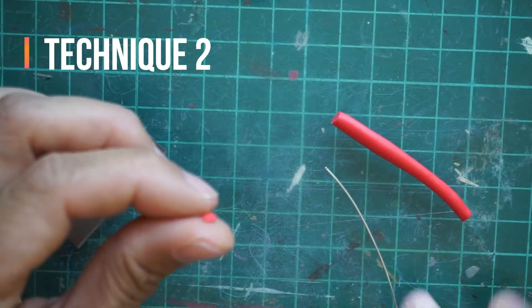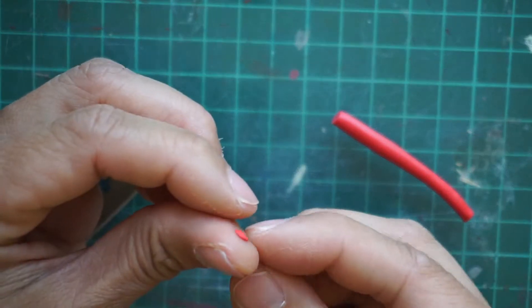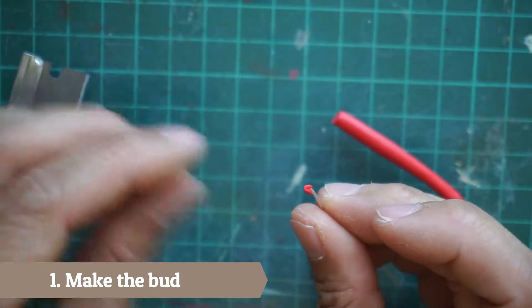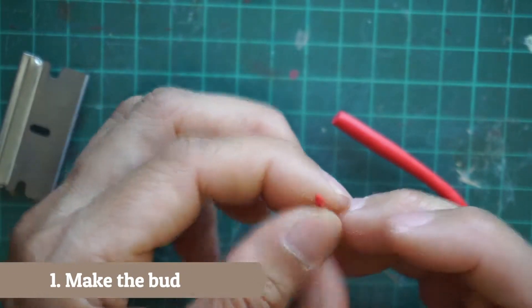Here is the second technique. I am using red clay here. So like in the first technique, wrap the end of the wire with the clay to make a bud.